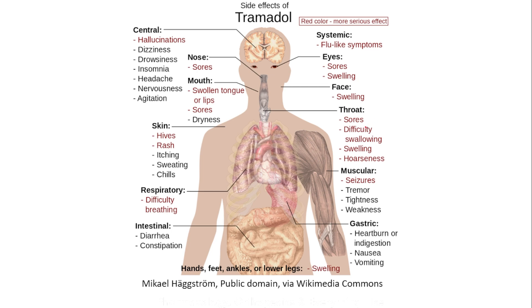A summary picture of tramadol's side effects shows: centrally — hallucinations, dizziness, drowsiness, insomnia, headache, nervousness, and agitation; nasal — sores; oral — swollen tongue or lips and dryness, with the swelling attributed to histamine release; skin — hives, rash, itching, sweating, and chills; and respiratory — difficulty breathing from bronchoconstriction.